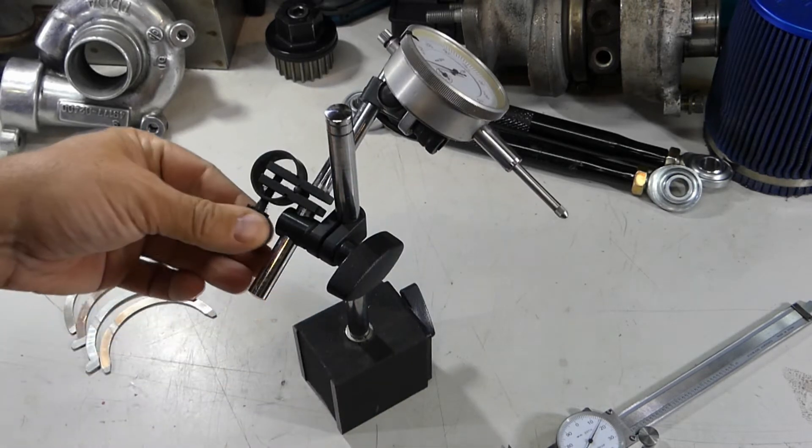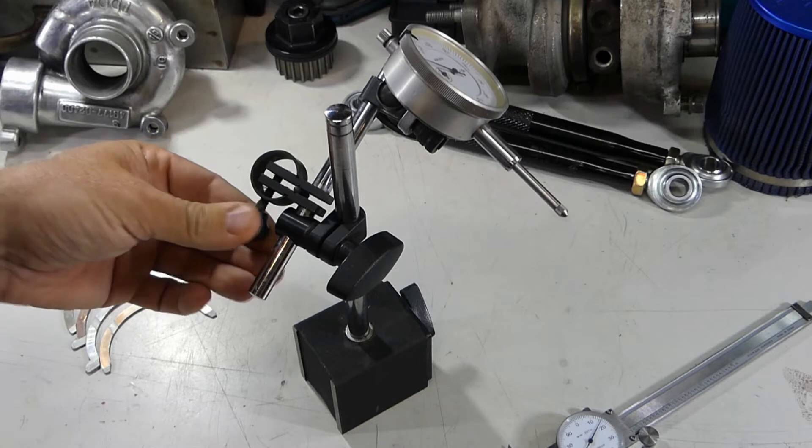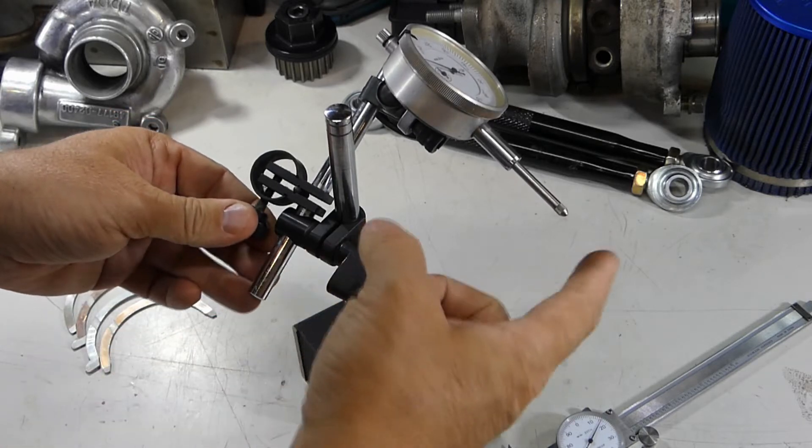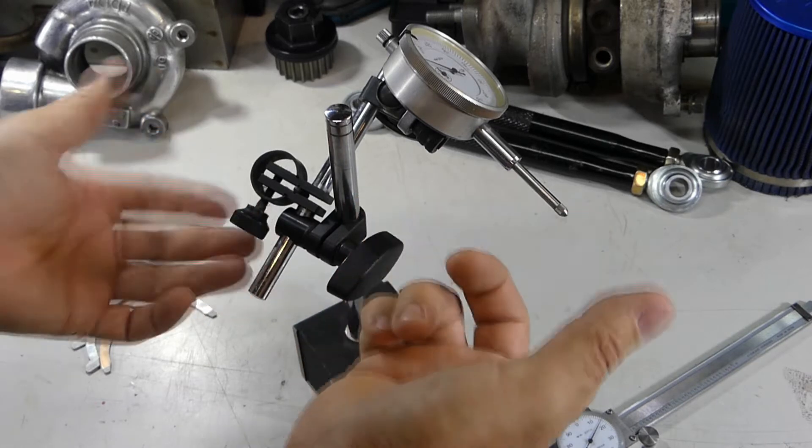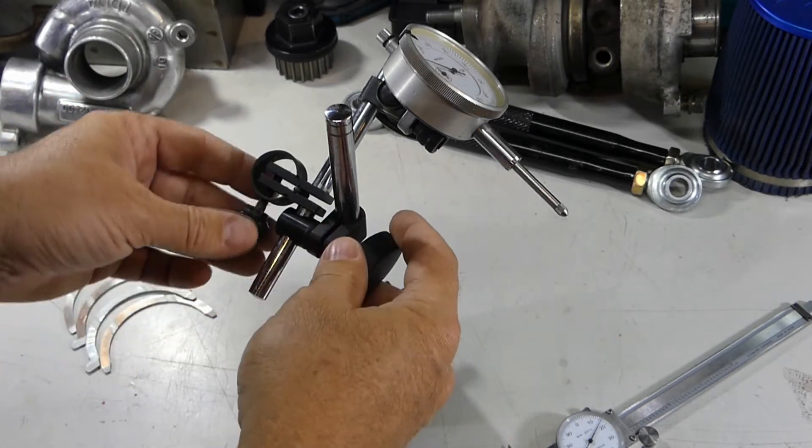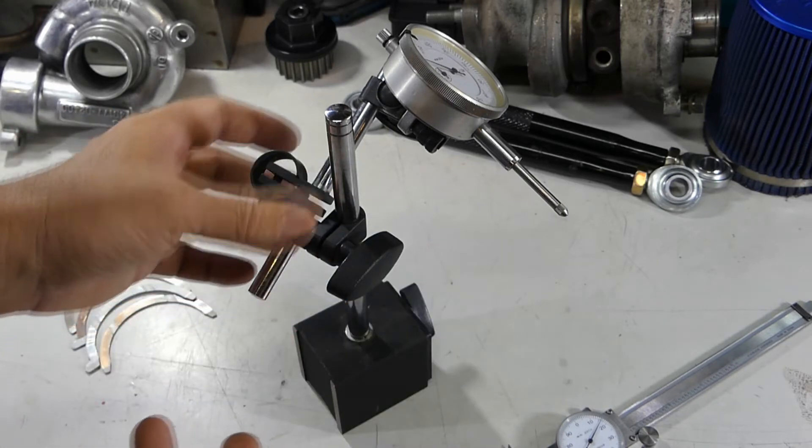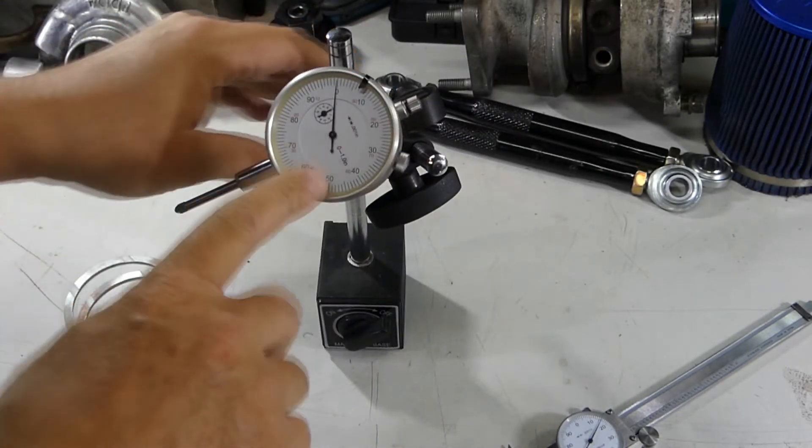One of the nice things is it has this little fine adjustment here on the end. The reason you have this fine adjustment is so that you can get the end of this needle as perpendicular to the surface as possible. Obviously the more perpendicular you are, the more accurate your measurement's going to be.